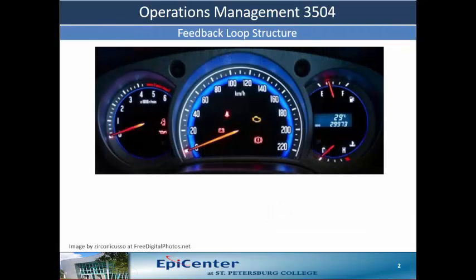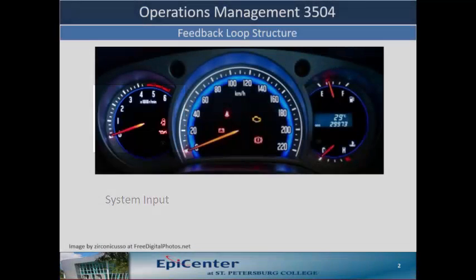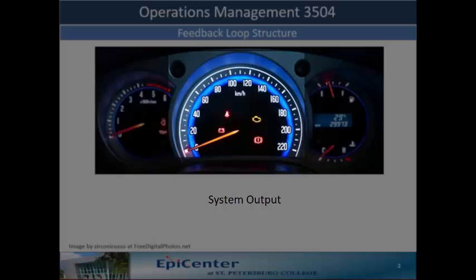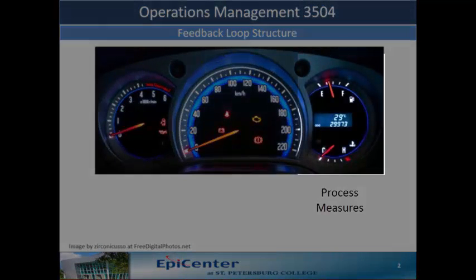Let's look at the dashboard of a car for example. We see gauges such as a tachometer reflecting the input to the system, a speedometer indicating the output — the speed — and fuel and engine temperature gauges as process measurements.